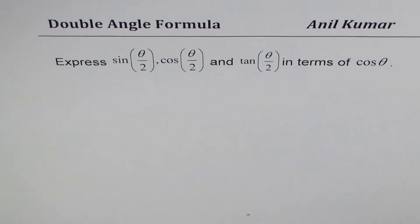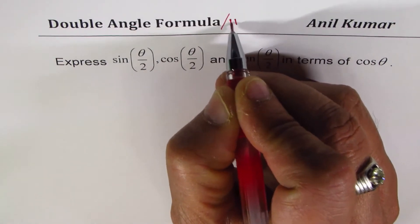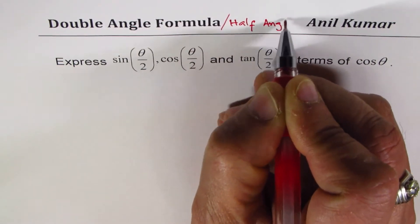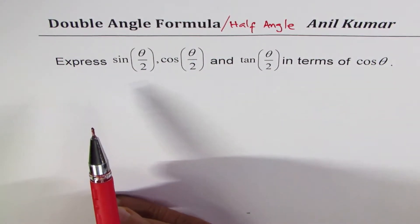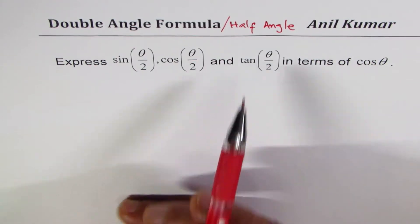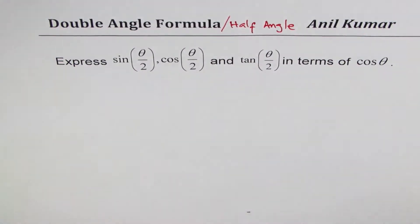I'm Anil Kumar. This is a very interesting video where we are going to derive the formula for half angle — double angle and half angle. The question here is: we need to express sin(θ/2), cos(θ/2), and tan(θ/2) in terms of cos θ.